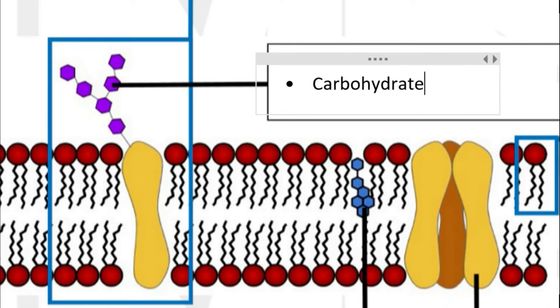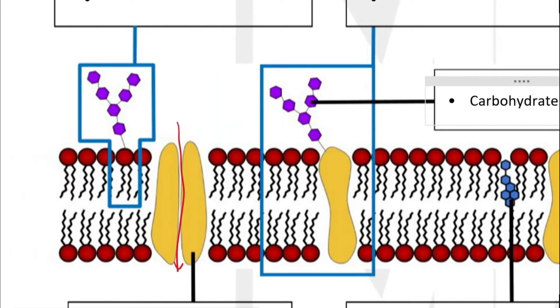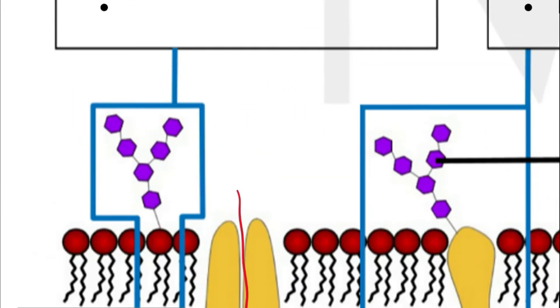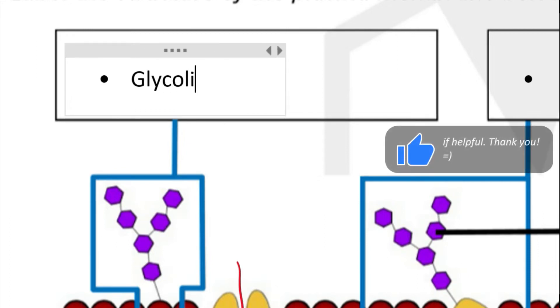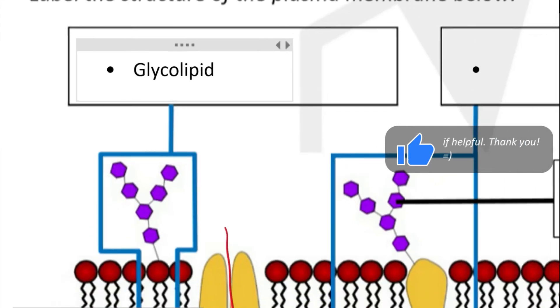And when carbohydrate is combined with the phospholipid, as we can see here, this is known as glyco for the carbohydrate part, lipid for the phospholipid part. This is a glycolipid.